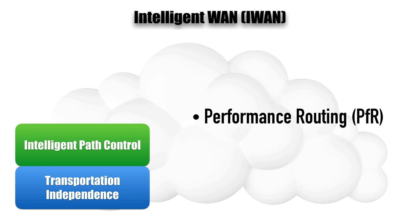Meanwhile, another type of traffic can use a different WAN link. For example, we might send voice over one DMVPN connection, but PFR decides that a file transfer isn't high priority and sends it over a different DMVPN connection — so that bulk data doesn't contend for bandwidth with our voice traffic.